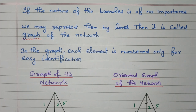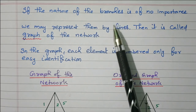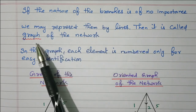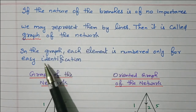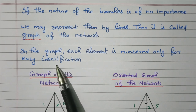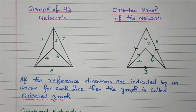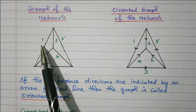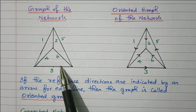Next we will see what is meant by graph and oriented graph. If the nature of branches is not important, we may represent them by lines. All elements can be represented by a line, and then it is called a graph of a network. In the graph, each element is numbered only for easy identification. So in the graph of our network there are 6 elements, numbered for easy identification.